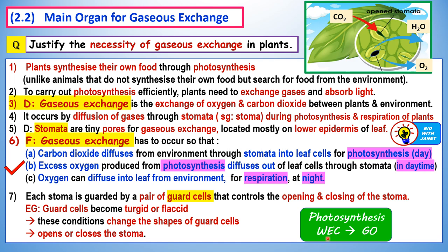For photosynthesis to occur efficiently, plants need to exchange gases — they need to take in carbon dioxide and release oxygen into the atmosphere. Gaseous exchange is the exchange of oxygen and carbon dioxide between plants and the environment, and it occurs by diffusion of gases through the stomata, which are the small pores or openings in the leaves. The singular form is stoma; the plural form is stomata.